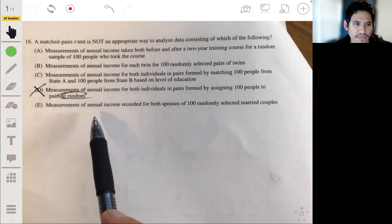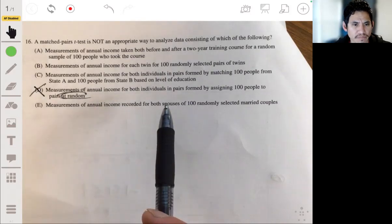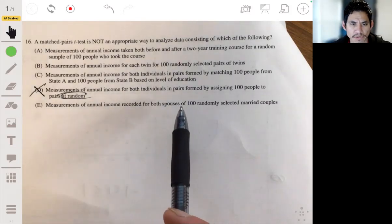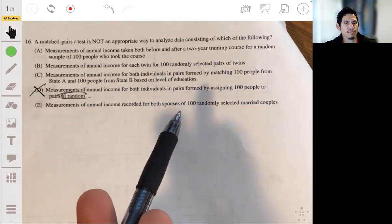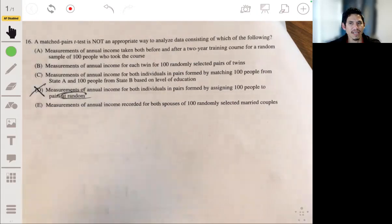And then E again would be okay because you're recording the annual income for both spouses. Again, it would make sense that each pair, each husband and wife, would have similar characteristics among themselves.